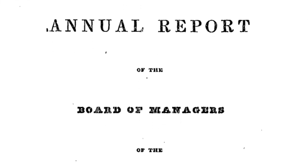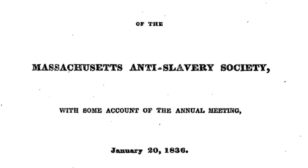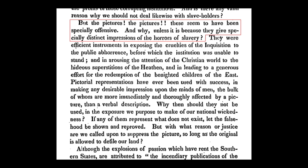Recently I've been doing a little research and I found this — from the 4th Annual Report of the Board of Managers of the Massachusetts Anti-Slavery Society, written in 1836. This is what they said about images: 'But the pictures — they seem to have been especially offensive. And why? Unless it is because they give specially distinct impressions of the horrors of slavery. Pictorial representations have ever been used with success in making any desirable impression upon the minds of men, the bulk of whom are more immediately and thoroughly affected by a picture than a verbal description.'